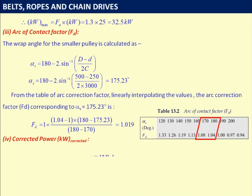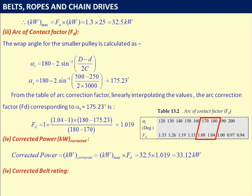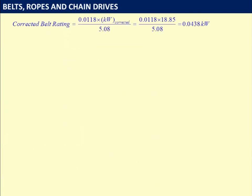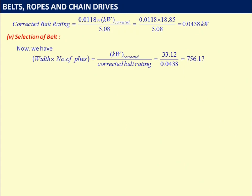Corrected power = maximum power transmitted × arc of contact factor FD = 32.5 × 1.019 = 33.12 kW. Selecting a high-speed belt (general purpose), the corrected belt rating at 18.85 meters per second is 0.0118 × corrected kW / 5.08 = 0.0438 kW. For belt selection, width × number of plies = corrected power / corrected belt rating = 33.12 / 0.0438 = 756.17.